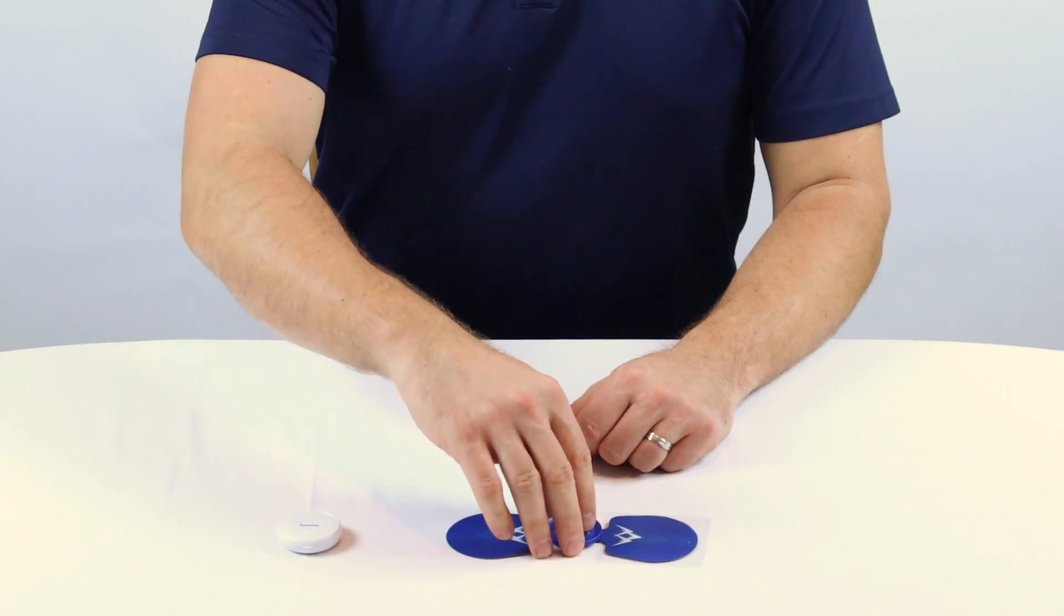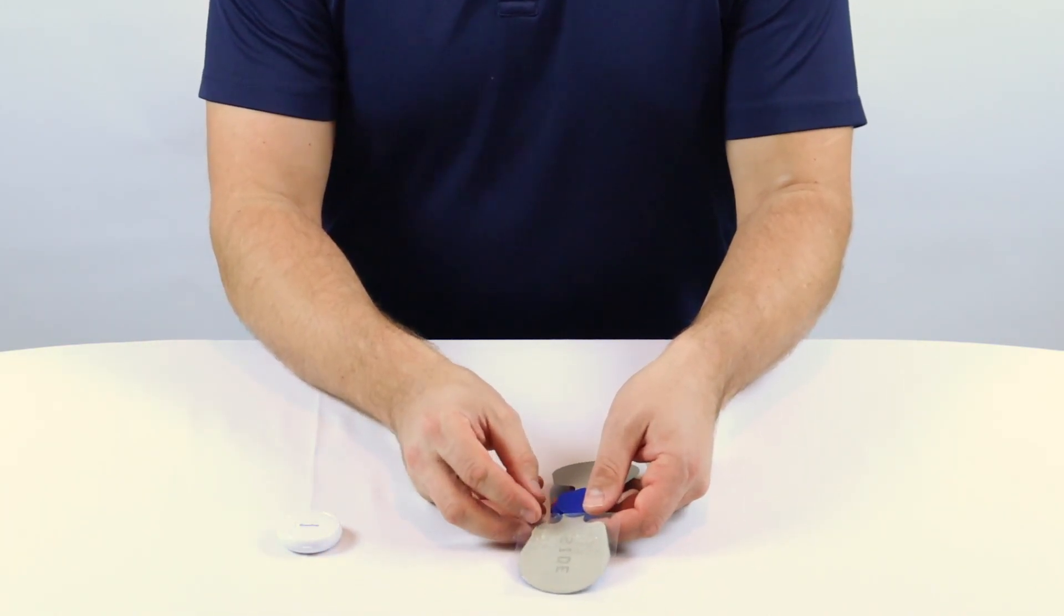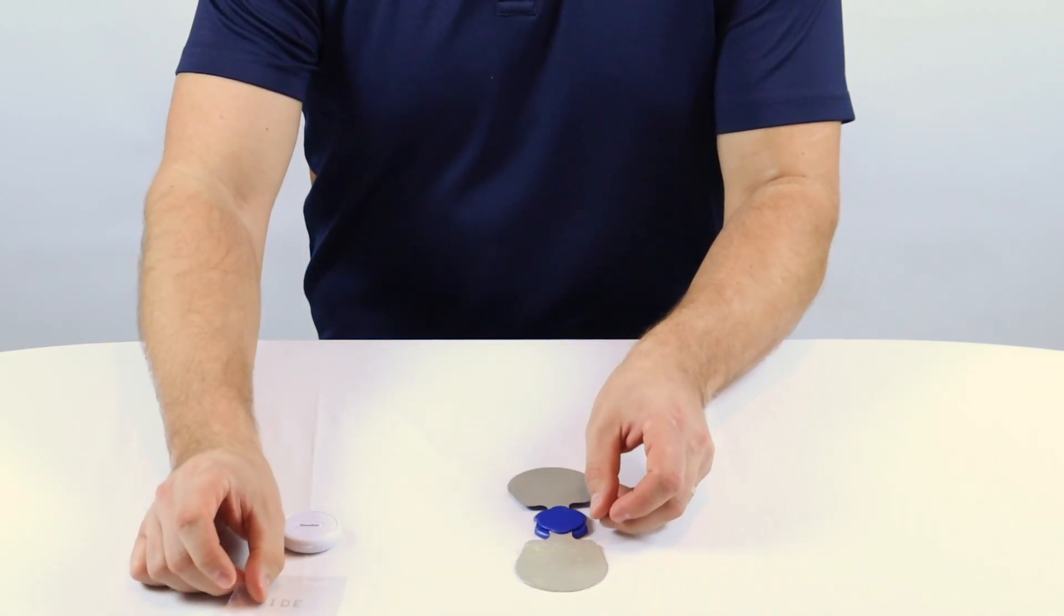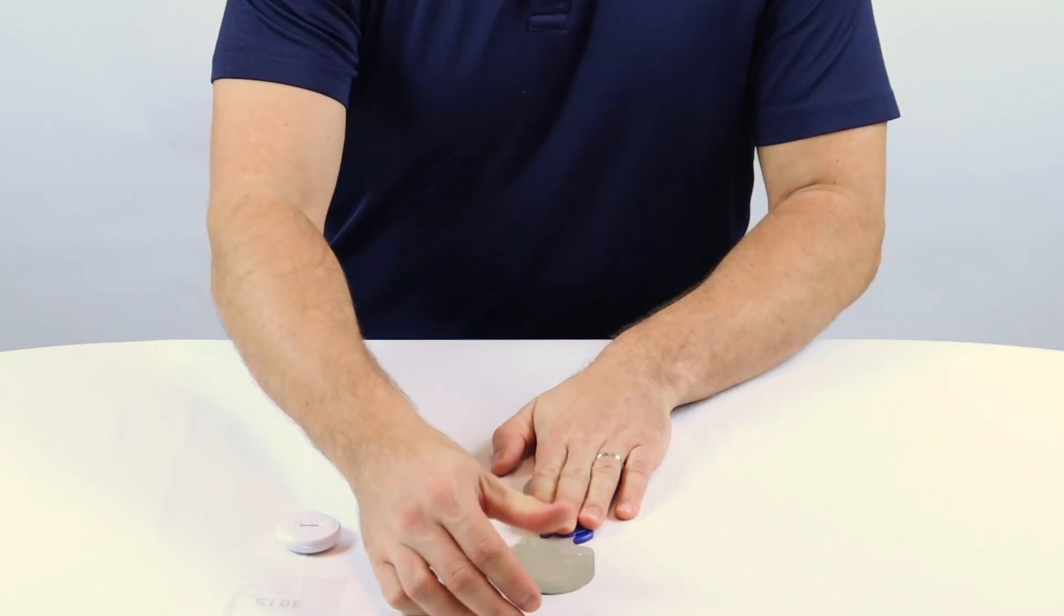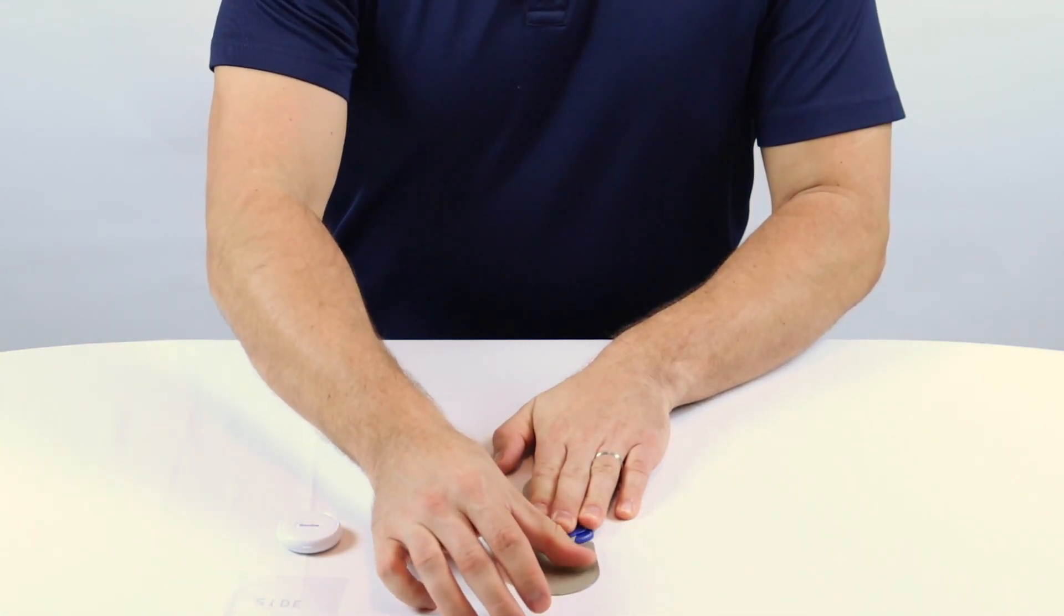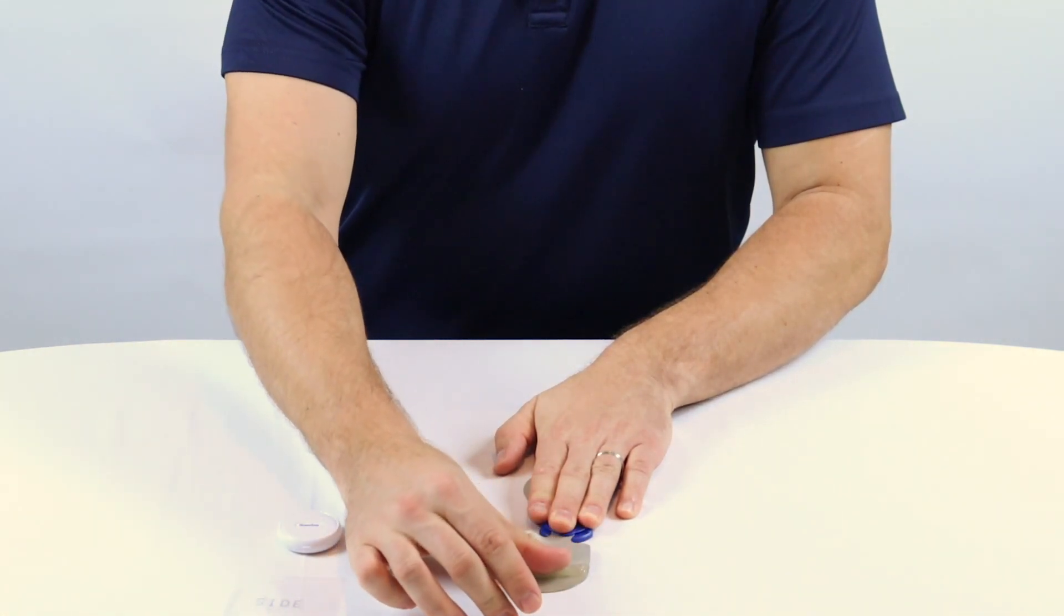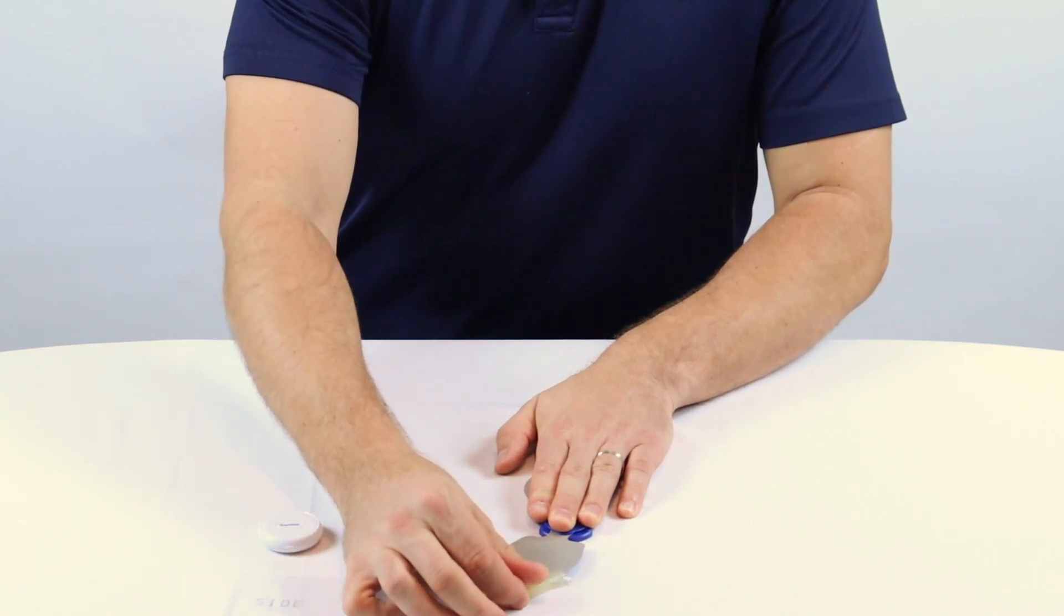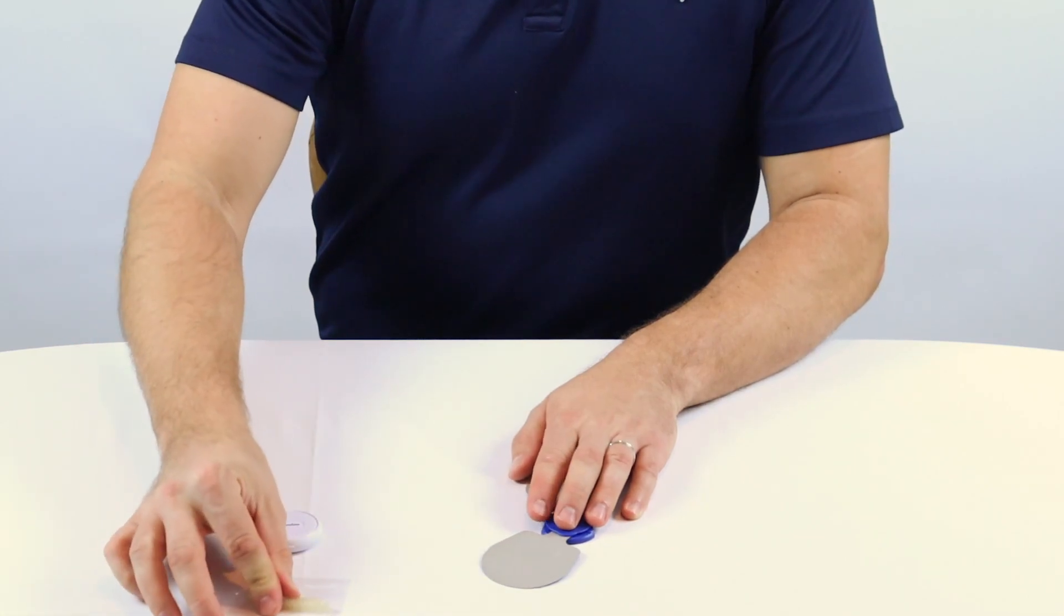The technique that we suggest for removing the gel pads is rolling the gel pad off of the wing. Do this by placing the wing gel side up on a table and holding it steady. Remove the plastic cover from the gel pad you want to replace and keep it for later. Then, from the end closest to the blue tab, roll the gel pad over onto itself until it's a cylinder at the wing tip and pull it off. Place it onto the plastic that you removed earlier.